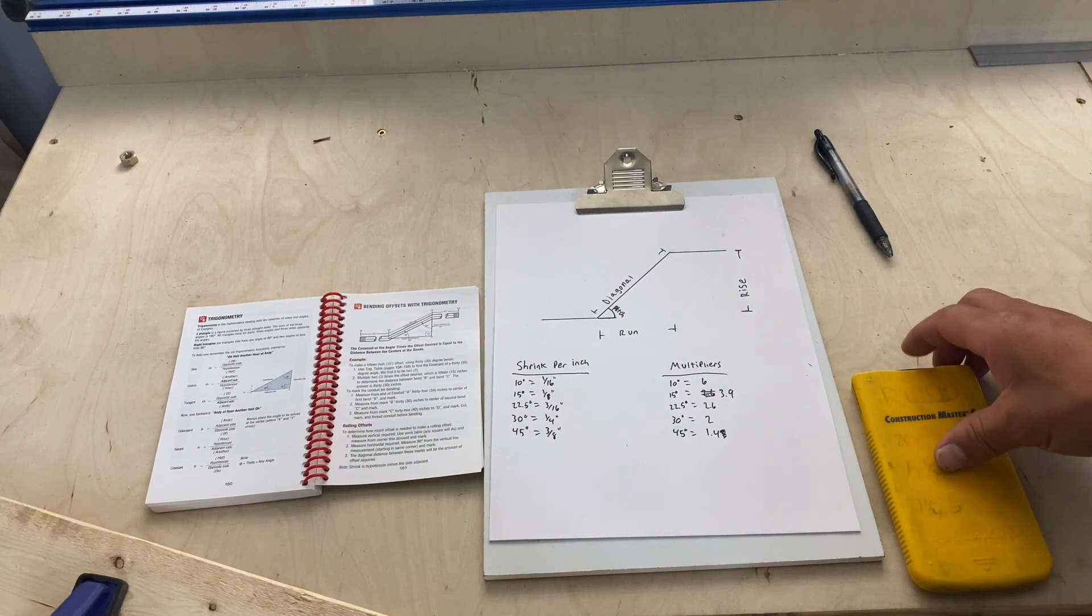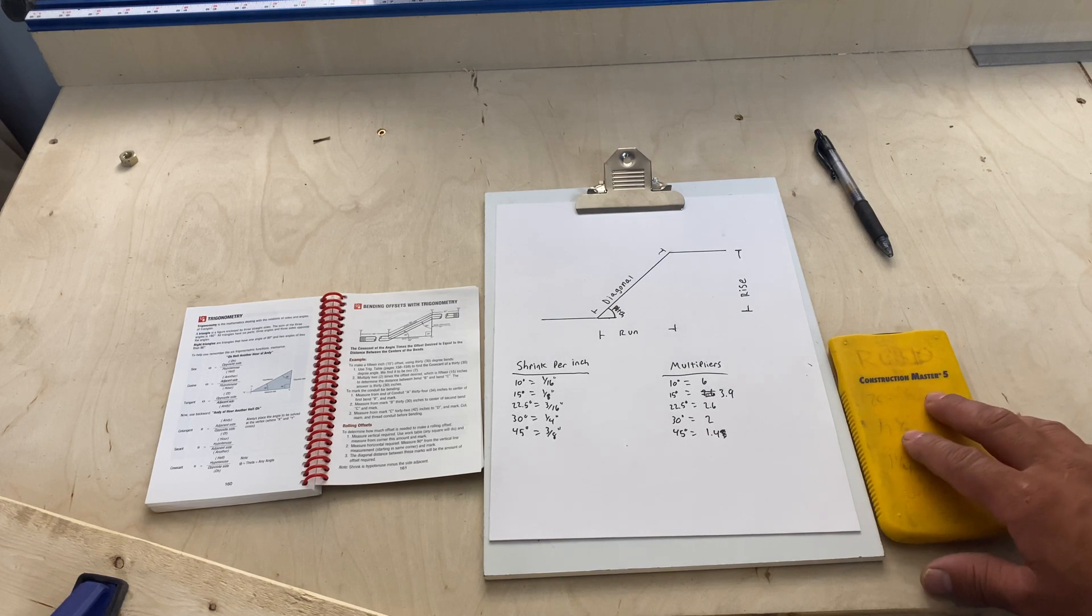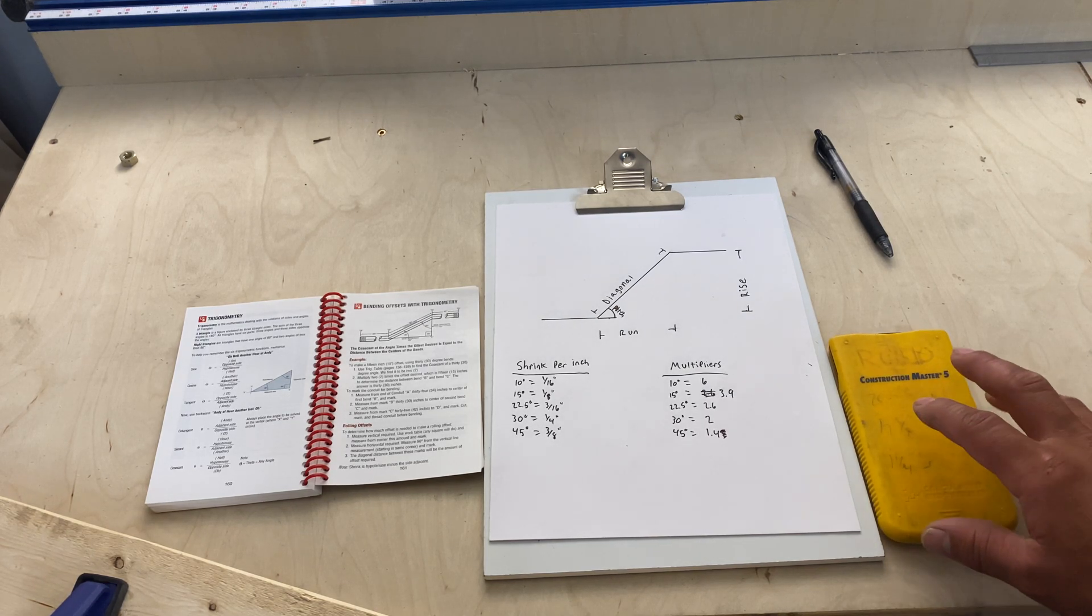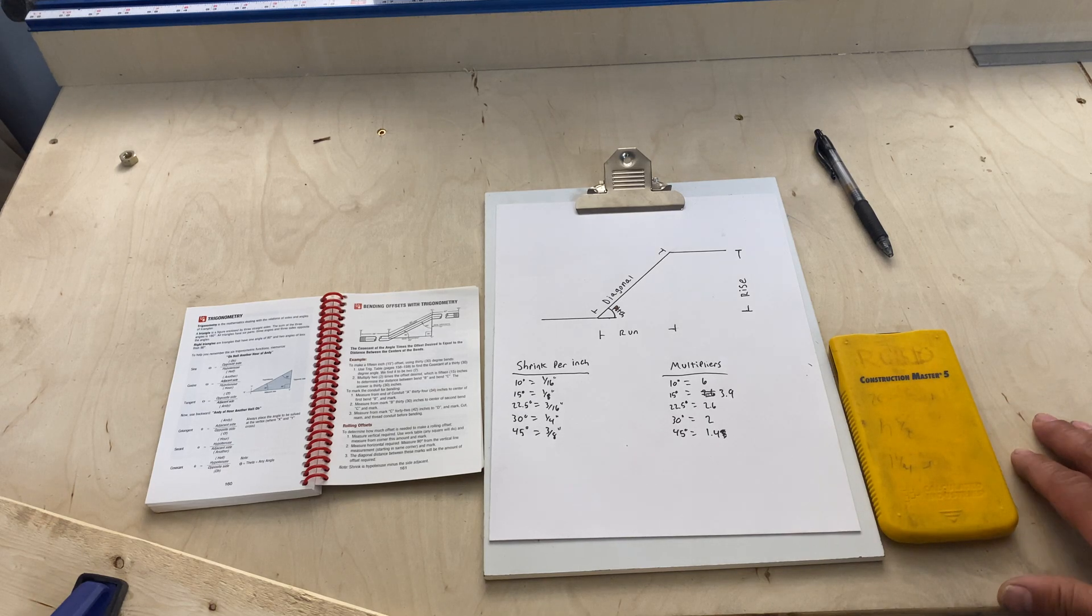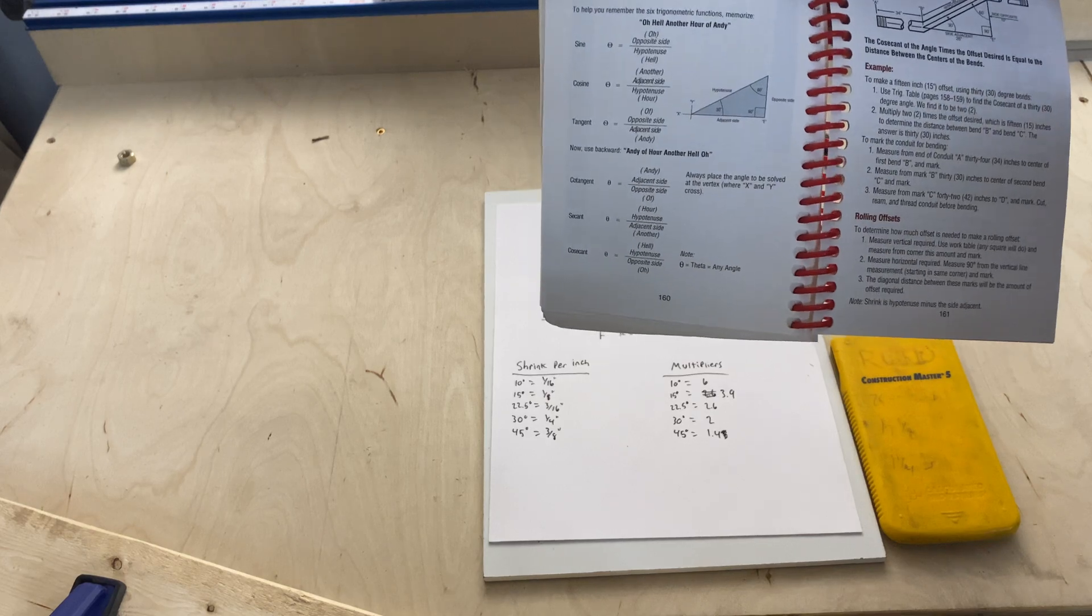Hey everyone, this is Ruby Electric here with a video on how to use a Construction Master 5 calculator to calculate your offsets. You can find a lot of this information in your Ugly's book.